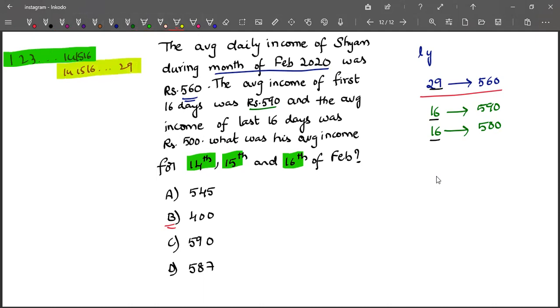Those two are having the average of 590 and 500. And now we are asking to find the average income for 14, 15 and 16, which means the average income for these 3 days.